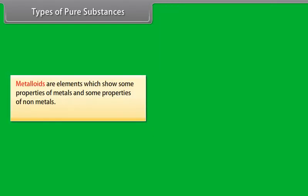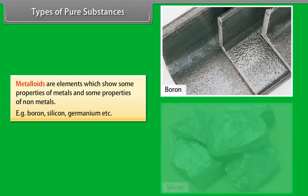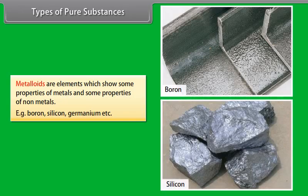Metalloids. Metalloids are elements which show some properties of metal and some properties of non-metals, like boron, silicon, germanium, etc.